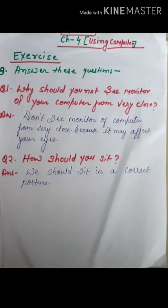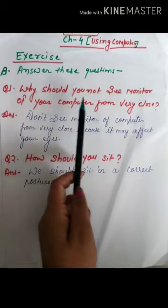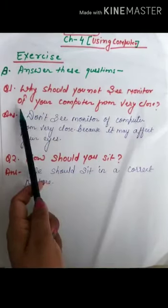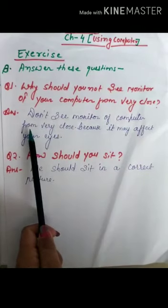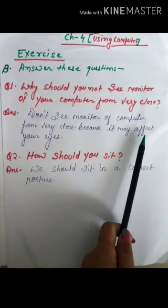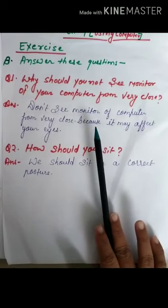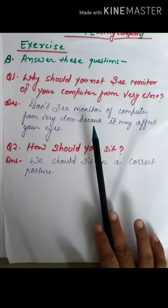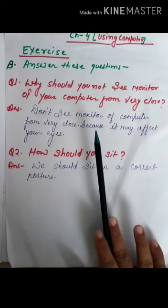Now we are going to answer the questions from page number 27. I have already solved it. Why should you not see the monitor of your computer from very close? Answer: don't see the monitor from very close because it may affect your eyes. There is heavy light in the monitor which affects our eyes, so we should sit away from the computer so that the light does not harm us.